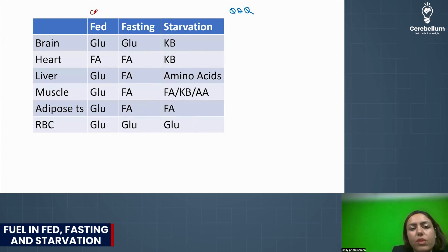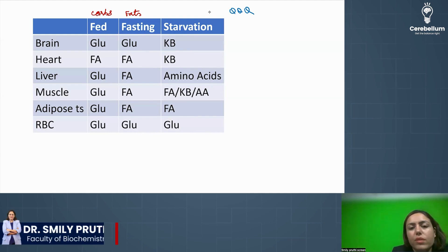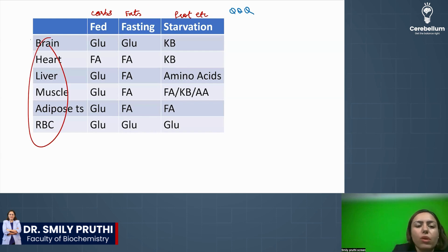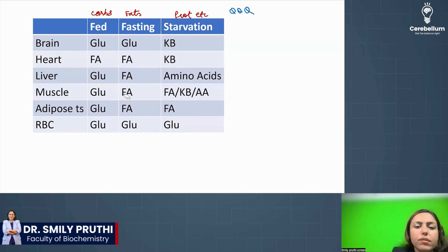The sequence we know is carbohydrates, then fats, and then proteins, and other things will also be used. On this side, various organs are listed. In the first column — the fed state — carbohydrate or glucose is written at most places, as glucose is the basic fuel.